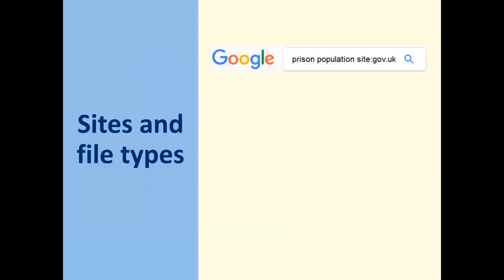The site colon command lets you specify a top level domain for Google to search. Top level domains include things like .com, .co.uk, and most usefully for academic research, .gov.uk and .ac.uk. For example, to find official data on the UK prison population, type in 'prison population' followed by 'site:gov.uk'. It will then only search UK government websites, immediately eliminating unofficial or non-UK websites. Note that you mustn't include a space after the colon, or the search command won't work.